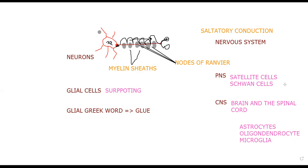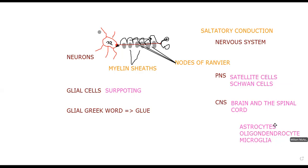The function of Schwann cells is to make the myelin sheaths — they provide myelination to the axons in the peripheral nervous system. The same function in the central nervous system is performed by oligodendrocytes. So: Schwann cells make myelin in the PNS; oligodendrocytes make myelin in the CNS.